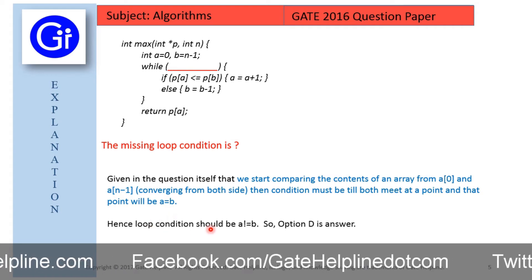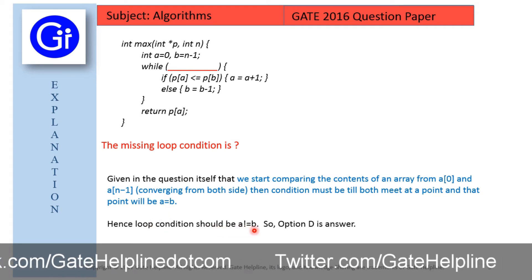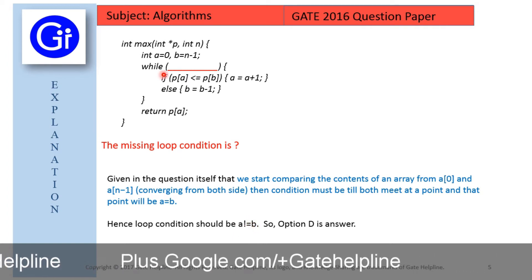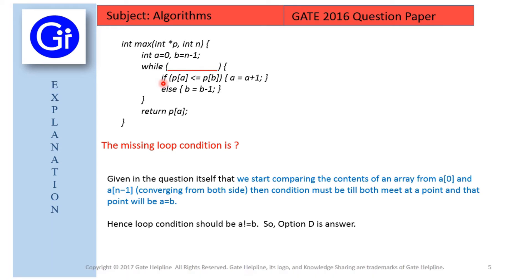So hence, loop condition should be a not equals to b, which means if a is not equals to b we will loop through this condition, and if a is equals to b we will exit this loop. So option d is the answer.